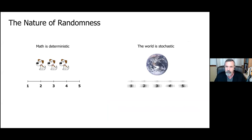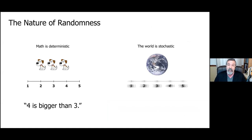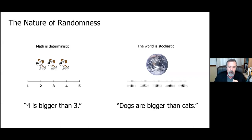But the world tends not to be deterministic, but stochastic — the numbers kind of vibrate. In the deterministic world, four is always bigger than three. But in statistics, numbers are stochastic. It's like saying not 'four is bigger than three,' but 'dogs are bigger than cats.' Generally speaking, that's correct. You can find a particular cat that's bigger than a particular dog, but that particular example doesn't negate the truth of the statement that in general, dogs are bigger than cats. That's a stochastic statement.